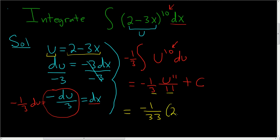So this is 2 minus 3x to the 11th power plus our arbitrary constant. And so that is the final answer.